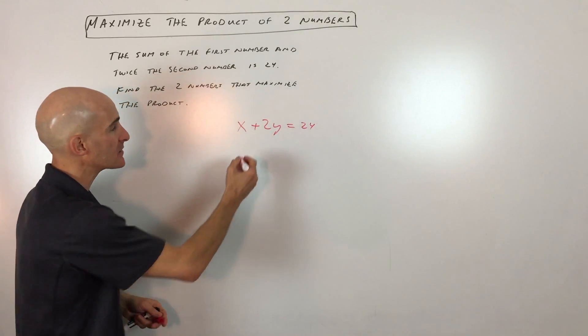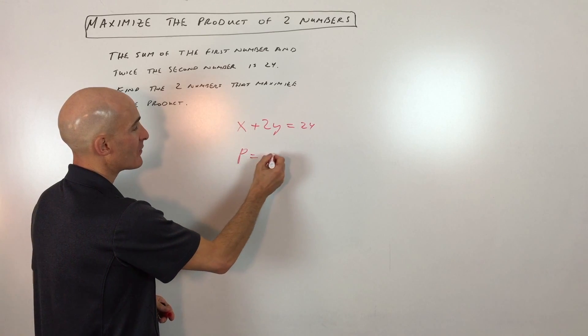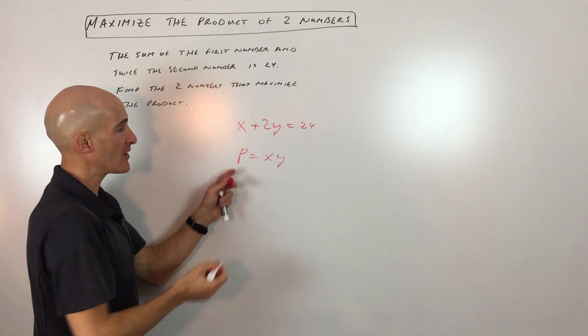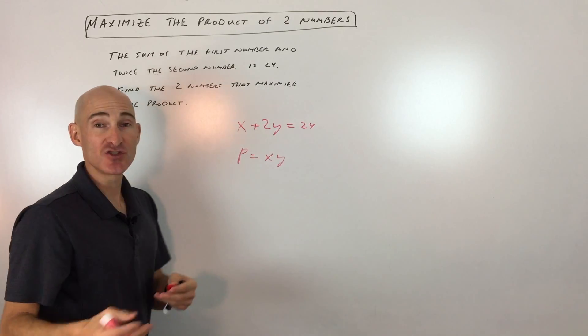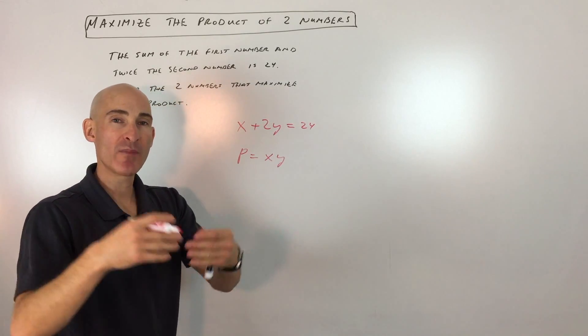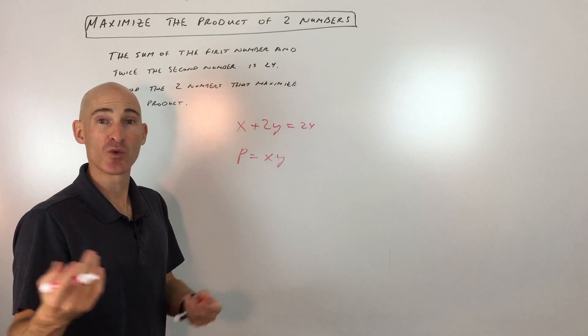Now we want to maximize the product, and the product you can think of as x times y. We're trying to find the maximum product when you multiply the two numbers together. But you can see the issue here. We've got two variables, and what we want to do is combine those two equations into one equation with one variable.